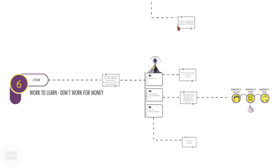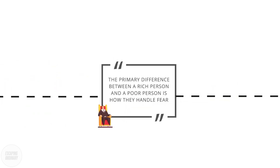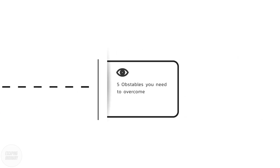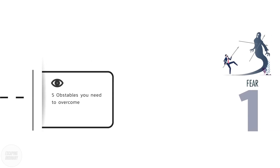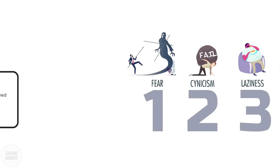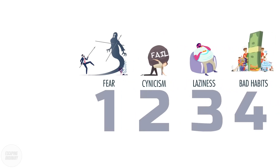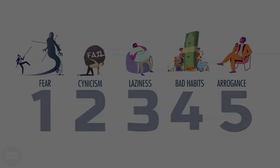Lesson 7: Overcoming Obstacles. The primary difference between a rich person and a poor person is how they handle fear. Here are five of the reasons people fail to achieve financial success: 1. Fear — they fear losing money more than making it. 2. Cynicism — they do not believe it is even possible to become wealthy. 3. Laziness — they are too lazy to change their habits. 4. Bad habits — their behavior towards money is dictated by their habits. 5. Arrogance — they are arrogant, ignorant, and ego-driven.